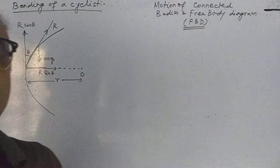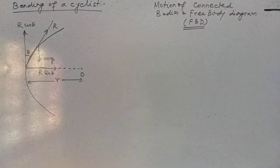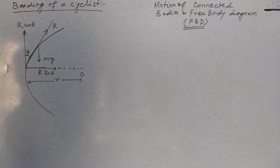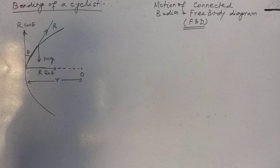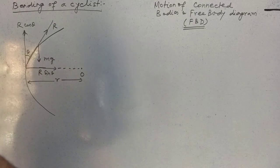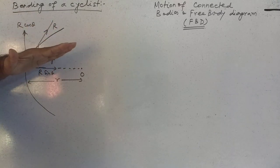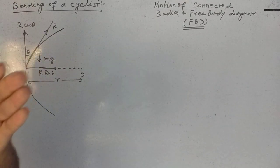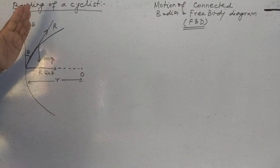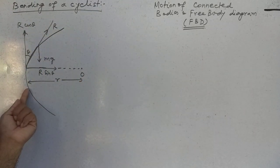Now see this is the bending of a cyclist — a common example. A cyclist is moving on a curved path. You might have experienced this: a person on a two-wheeler always has a tendency to lean towards the center of the path. This is the center of the path, and R is the radius of the path.